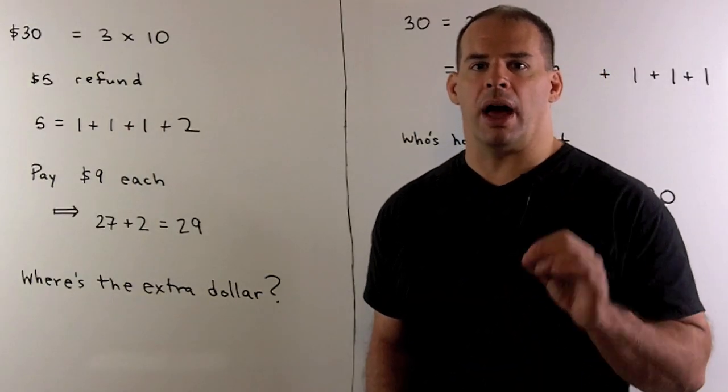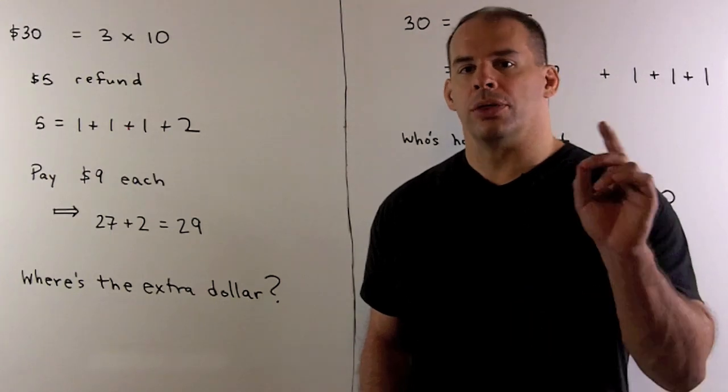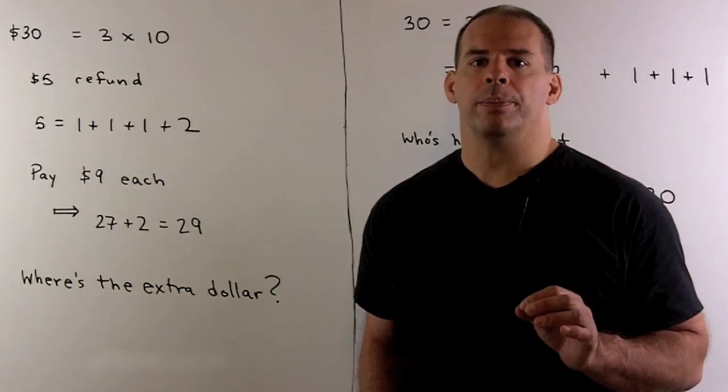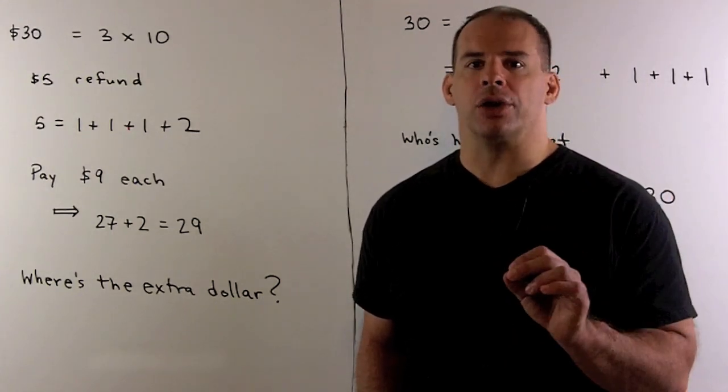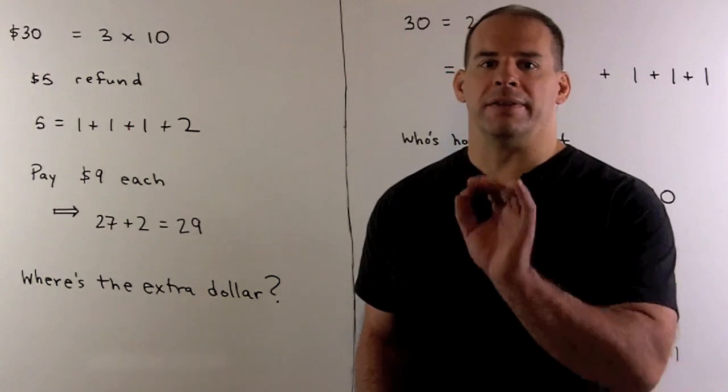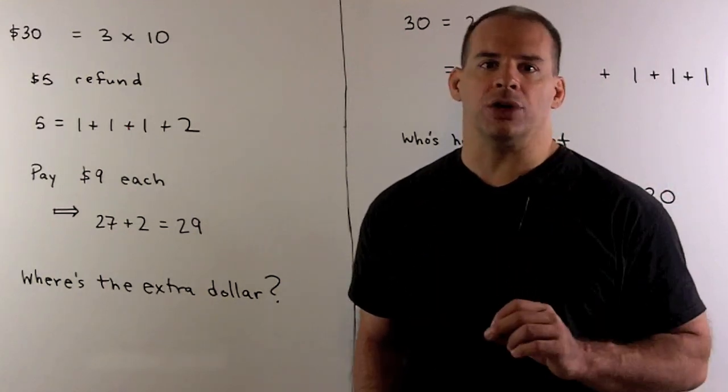Here's a classic, the bellhop problem. Three guests rent a room in a hotel. The cost for the night is $30, so they divide the bill evenly and pay $10 each.